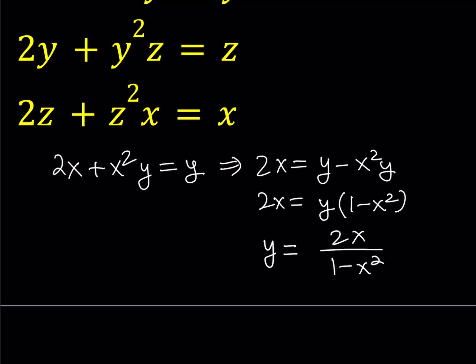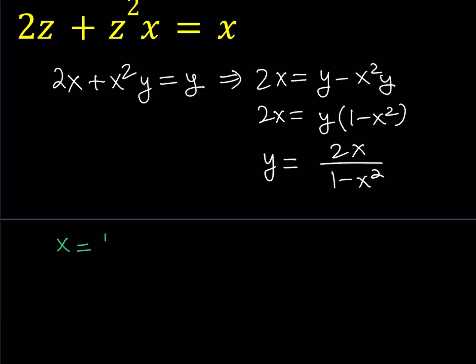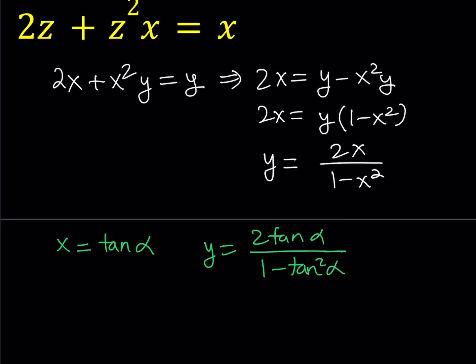What we did in the first equation can easily be replicated to the other ones because of the type of equations we have. This type of equation should give you a message, and that message is trigonometry. If you go ahead and replace x with tangent α, you get y equals 2 tangent α over (1 minus tangent² α). Doesn't that look like the double angle formula? It does — this is equal to tangent 2α.